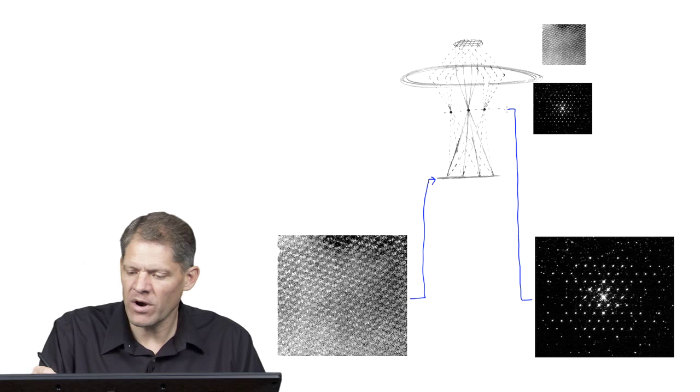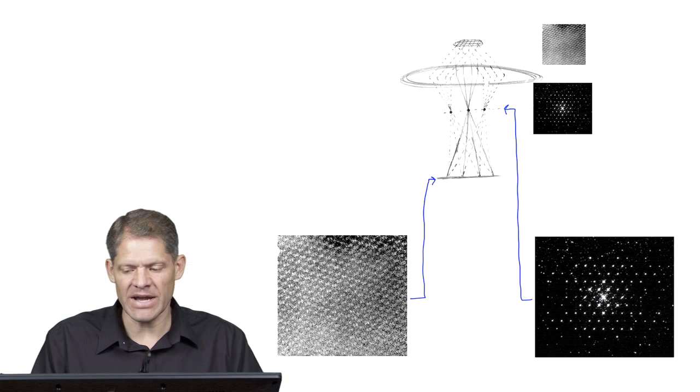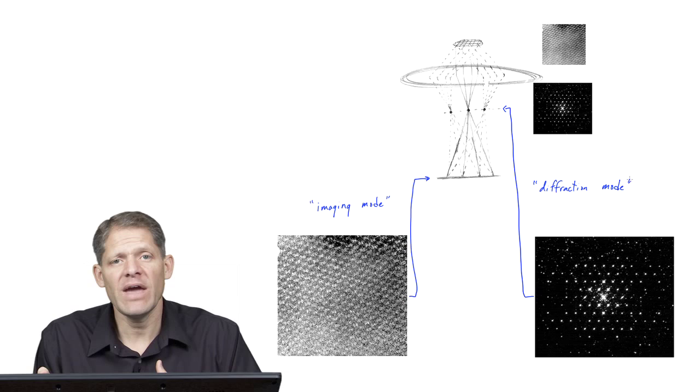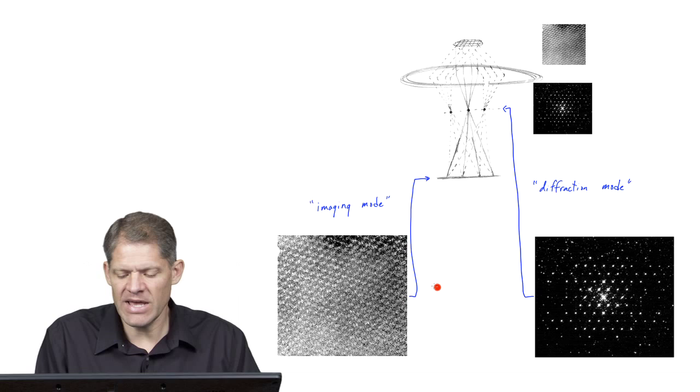This is called diffraction mode where the wave function on the back focal plane is made conjugate to the detector. And this is called imaging mode because the detector is made conjugate to an image plane. What are the advantages and disadvantages of the two modes?